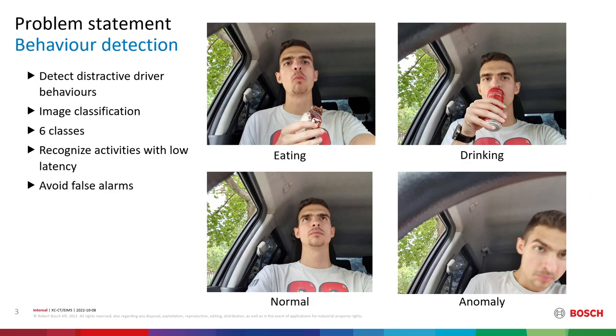So, what is a driver behavior? Driver behaviors are different activities which include some distraction for the driver and cause them to disturb their attention from driving. The goal of this project is to identify such distractive behaviors. This problem is interpreted as a classic image classification problem. There are 6 classes: eating, drinking, smoking, phoning, normal and anomalies. The goal is to recognize these classes. However, it has to be done with low latency as well, and false alarms have to be avoided because the drivers would get annoyed and turn off these systems in the car if they would find them annoying and disturbing.